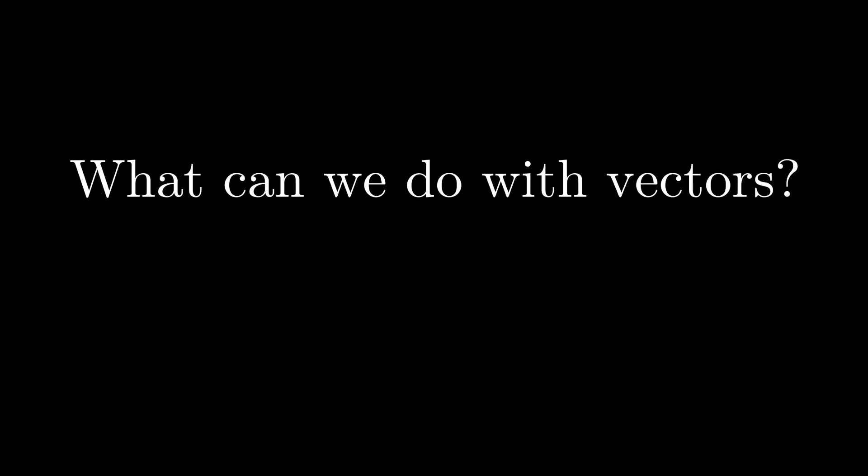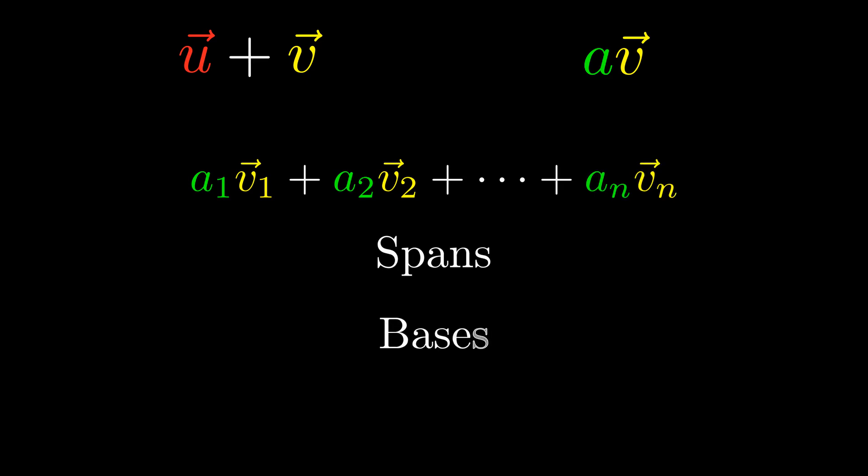So what can we do with vectors? Let's use our experience with arrows to figure this out. We know that we can add vectors together, and we also know that we can multiply vectors by scalars. Notice that we can actually do quite a bit with just these two operations. We can form linear combinations, which also allows us to talk about things like spans and bases. From this, because mathematicians care about what we can do with objects more than what the objects actually are, mathematicians simply define vectors as anything that can be added and scaled.